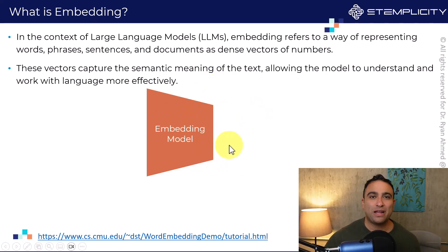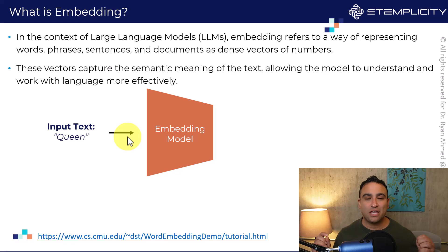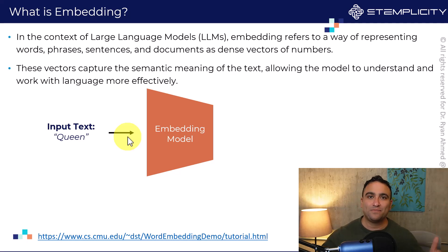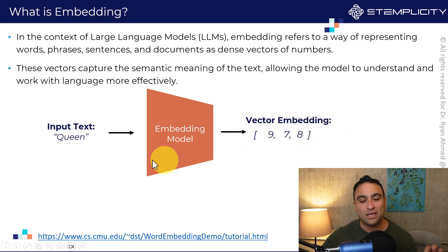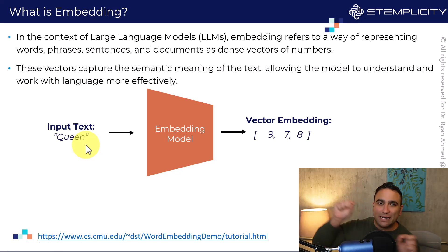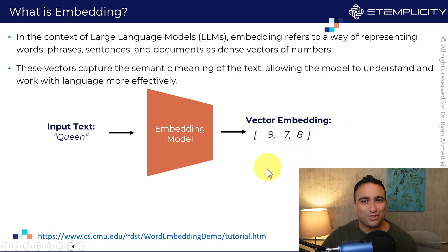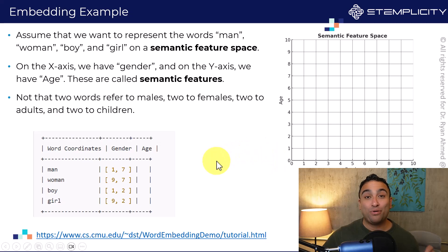Let's assume that I have an embedding model. This embedding model is going to take one word — let's say 'queen'. Before we train these AI models, we employ an embedding model. The embedding model takes in text and converts this input text to a vector. So the word 'queen' is going to be encoded — represented in a vector format — as nine, seven, and eight. I know it sounds a bit unusual, like where did we even come up with these numbers? Let me show you what I mean with a practical example.